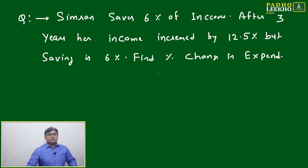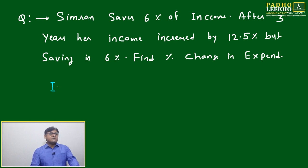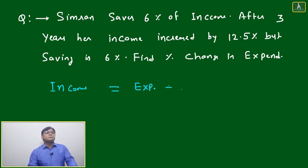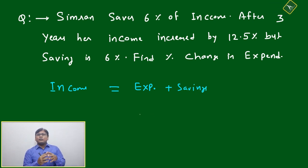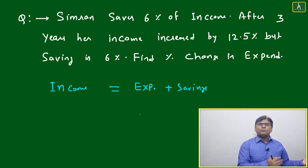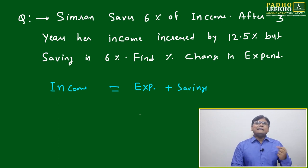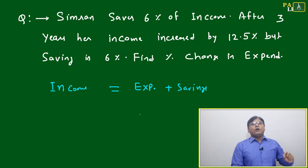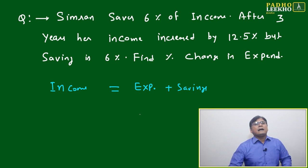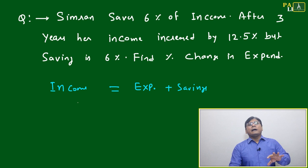Now we will come to the next question, also related to another application area. In every household, we know that income is something everybody is worried about. Finally, whatever income we have, we are either doing expenditure or saving. Expenditure covers food, livelihood, and luxurious items, while savings include bank deposits, PF, PPF, FD, or LIC policy. So income is divided into two parts: expenditure and savings.